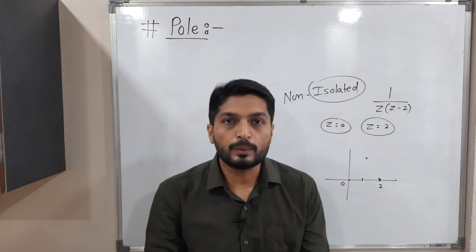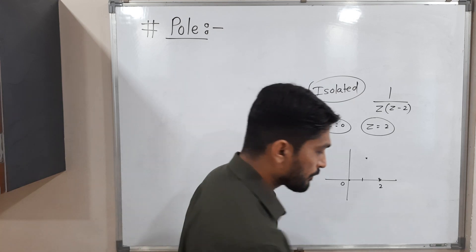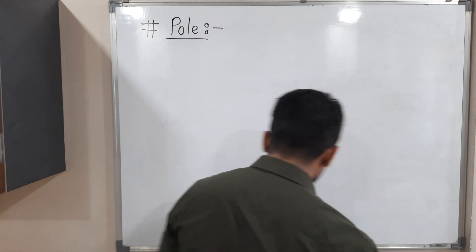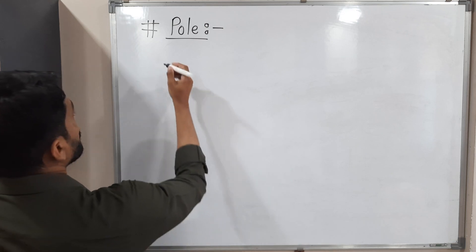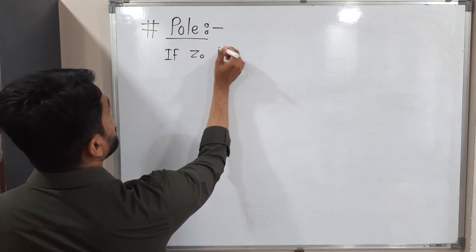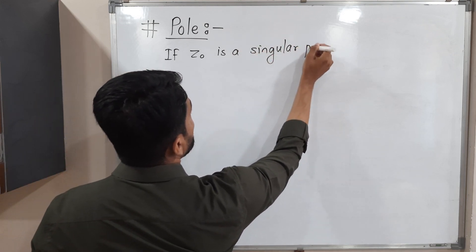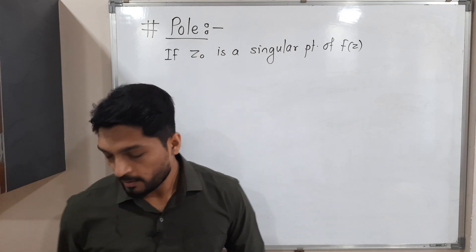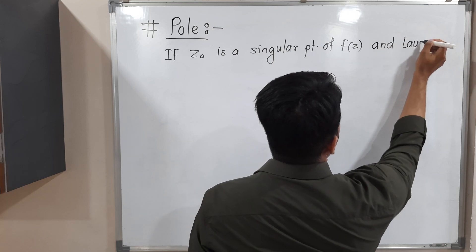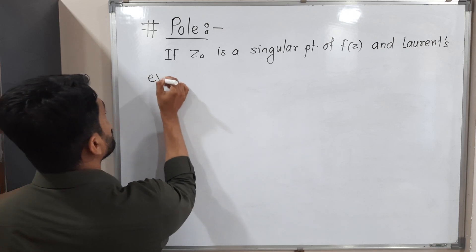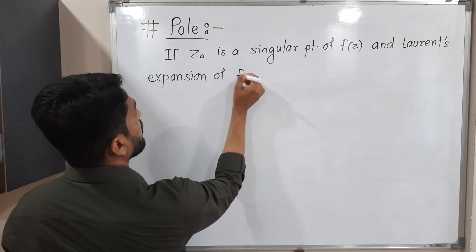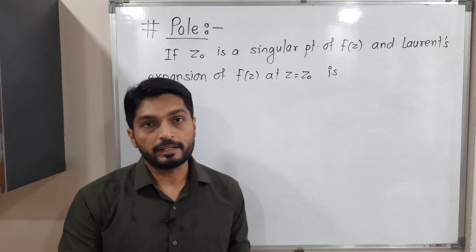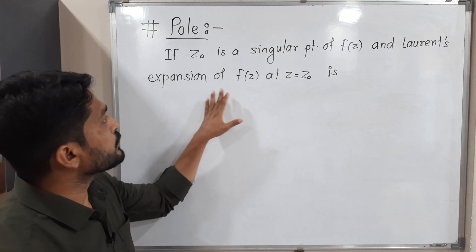Pole is one type of isolated singularity. Let us discuss its definition. We say any point z-naught is a pole if z-naught is a singular point of f(z), and the Laurent expansion of f(z) about z equals z-naught has a principal part with only finitely many terms.